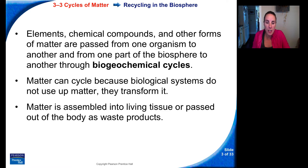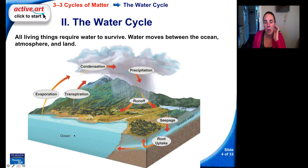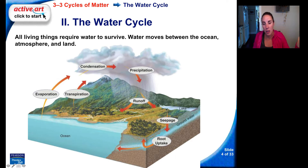Matter is assembled into living tissue or passed out of the body as waste products. Starting with the water cycle: all living things require water to survive. Water moves between the ocean, atmosphere, and the land. Water enters the atmosphere basically two ways — evaporation and transpiration. Water vapor then condenses and falls as precipitation back to earth. Runoff then goes into lakes, groundwater, and back into the ocean, and the cycle starts again.